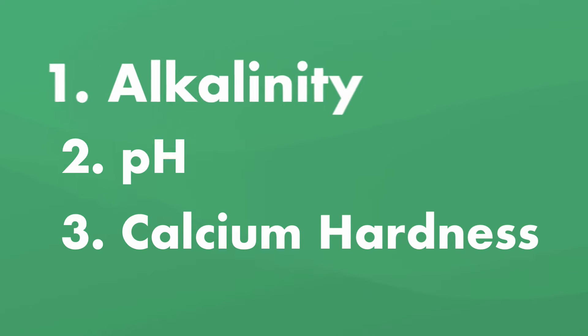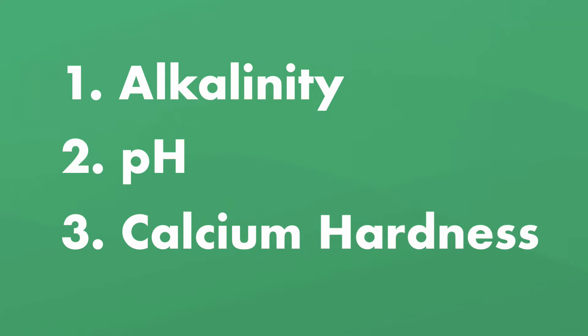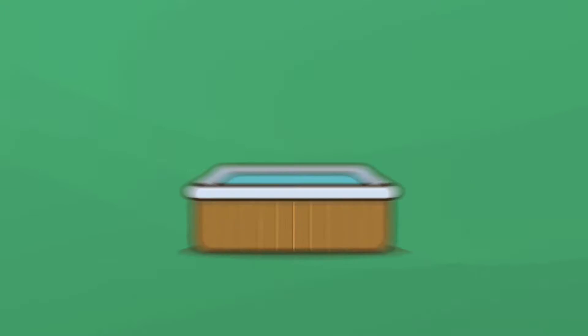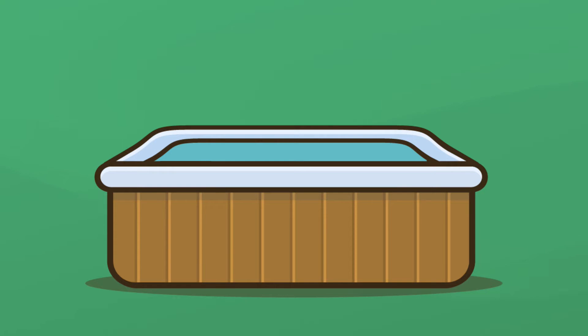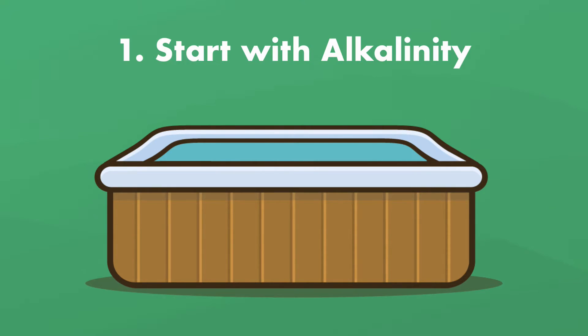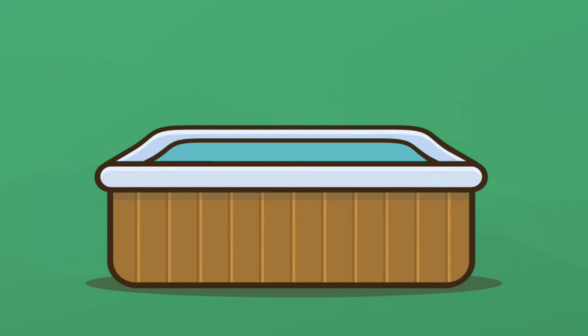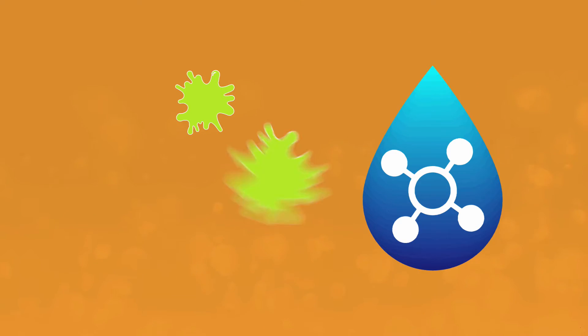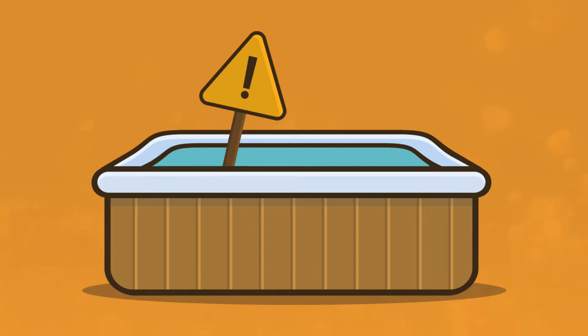Once you understand these concepts you'll be able to troubleshoot most hot tub water problems. First up, pH and alkalinity — these two go hand in hand. When you start balancing your water's chemistry, the first thing you're going to adjust is the total alkalinity. Total alkalinity is the water's ability to neutralize acids — it acts as a buffer, reducing acidity in your hot tub water. No one wants to soak in acidic water, right?